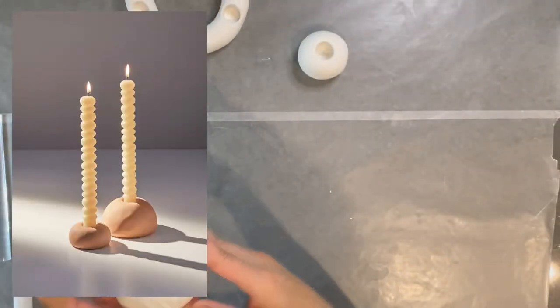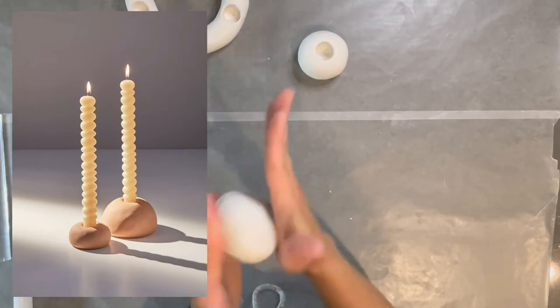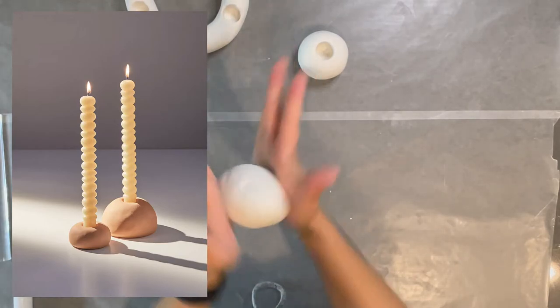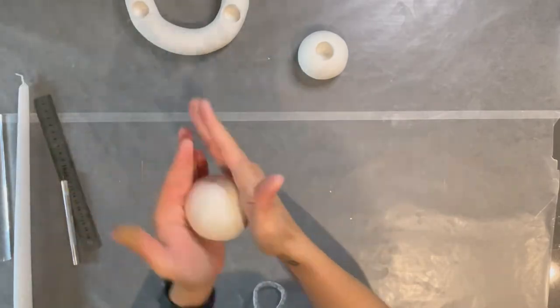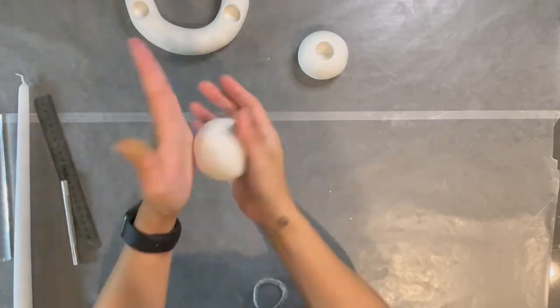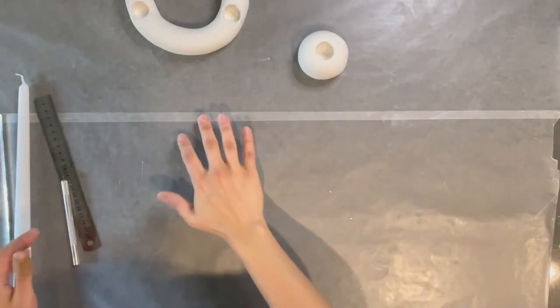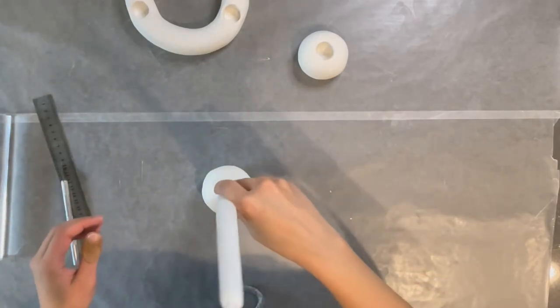The last set of candle holders were the easiest and quickest to recreate. I just started by making a ball shape out of the clay, then I gently pushed it down with my palm to flatten the bottom a little bit. Next, I pushed the taper candle in to create the hole. For this, you don't need to carve out the clay because your shape won't really get warped. I made two of these candle holders, one slightly bigger than the other one.